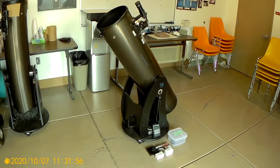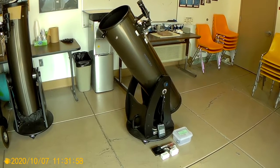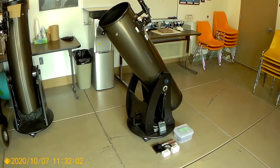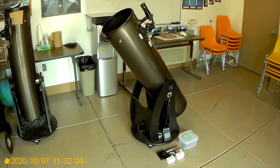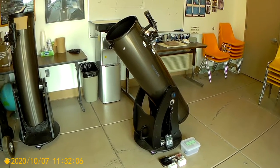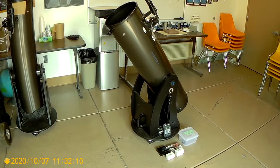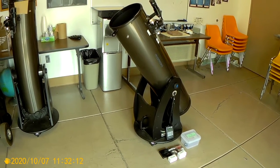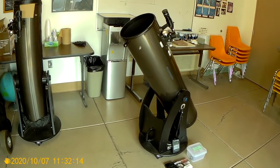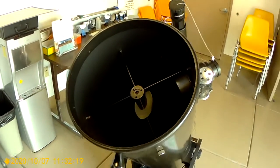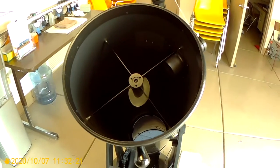Okay everybody, here we have the Dobsonian telescope that we have recently purchased. About two years ago, so these are fairly new. These are, they have an aperture opening of 10 inches or 254 millimeters.